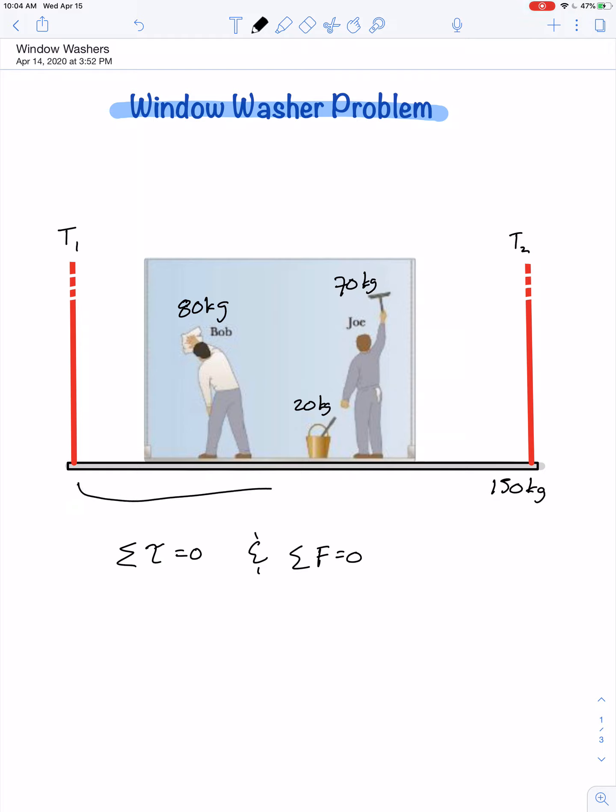The scaffold has a length of 12 meters. Bob is standing about two and a half meters from the left cable, the bucket is seven meters from the left side, and Joe's standing about four meters from the right side.